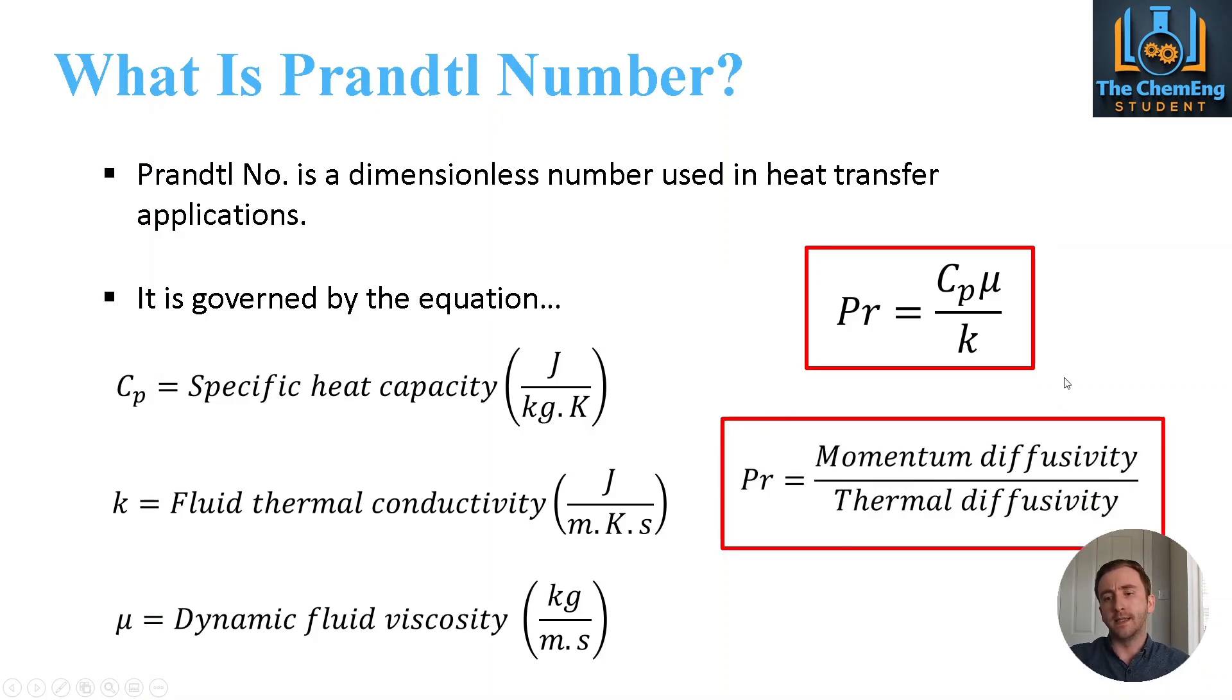Now another way that we can think of Prandtl number is the ratio of momentum diffusivity over thermal diffusivity. If we look at it from the standpoint of the nomenclature in this equation, we have the physical properties of the fluid where we have the specific heat capacity as well as the dynamic fluid viscosity so this has momentum to it, whereas k is the thermal conductivity so that is the thermal diffusivity of the fluid.